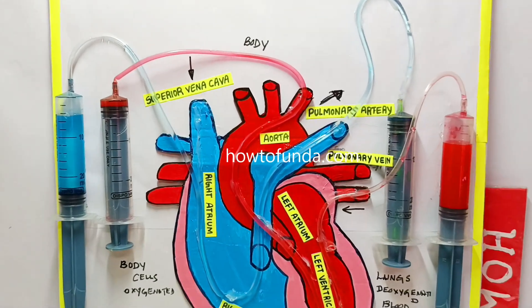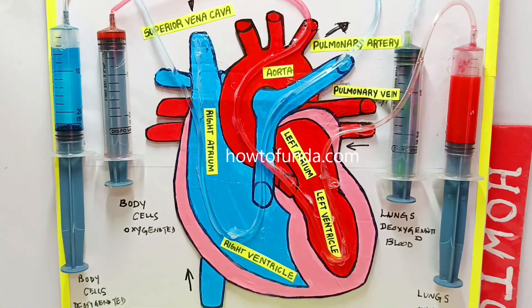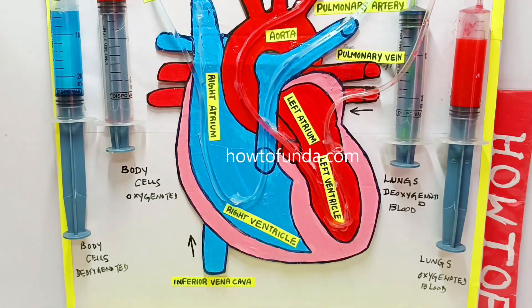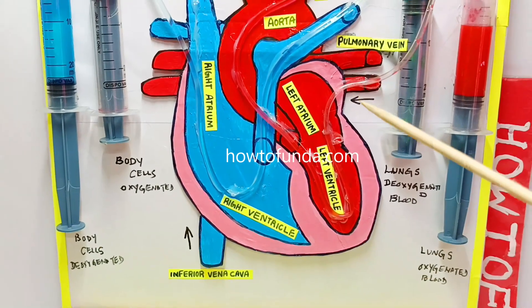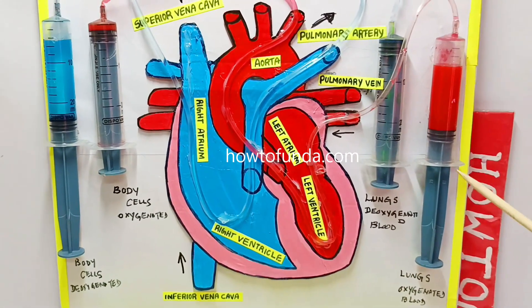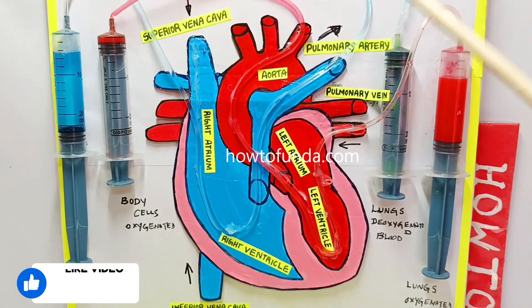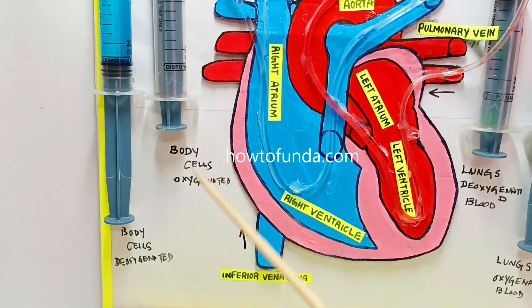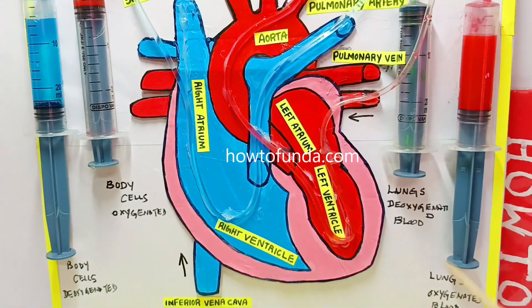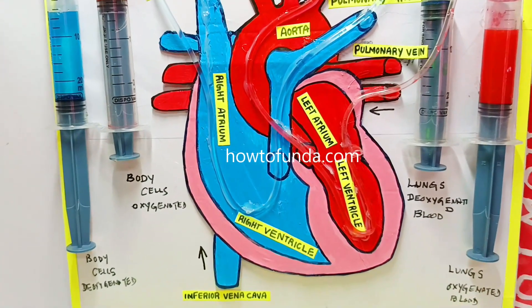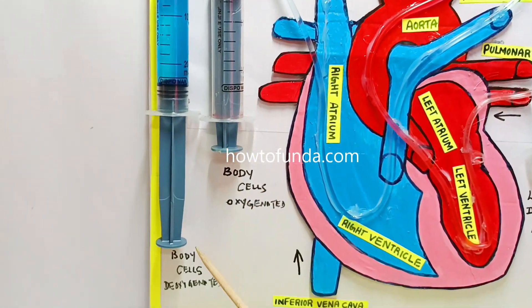Hello friends, welcome back. In this video I will be explaining how the heart model really works. We are trying to depict this by making use of a working model with the help of syringes. We are using four syringes here - two syringes on the left side and two syringes on the right side.